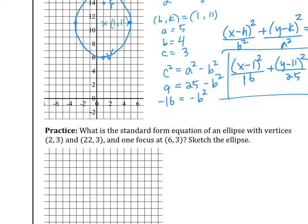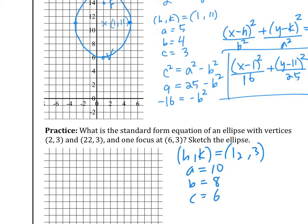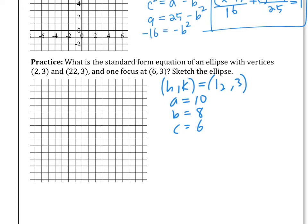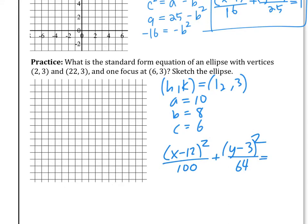This next one, the vertices are kind of big — you may want to graph every 2. All right, so h, k is (12, 3), A is 10, B is 8, and C is 6. So this is going to be (x minus 12) squared over 100 plus (y minus 3) squared over 64 equals 1.